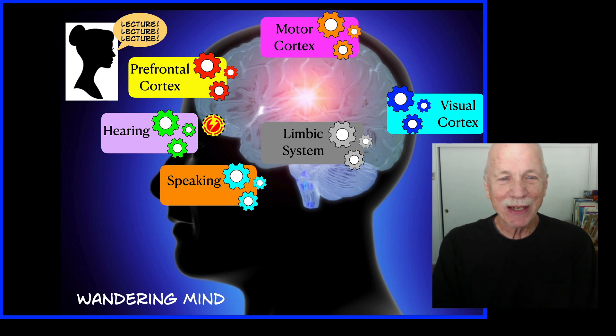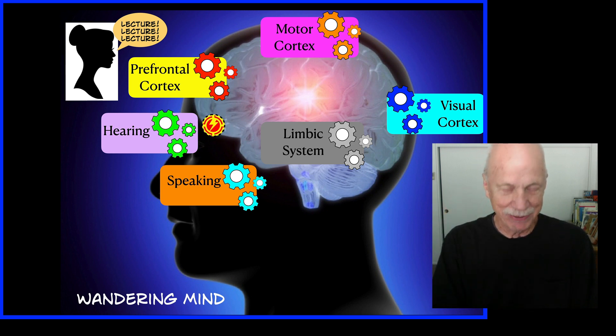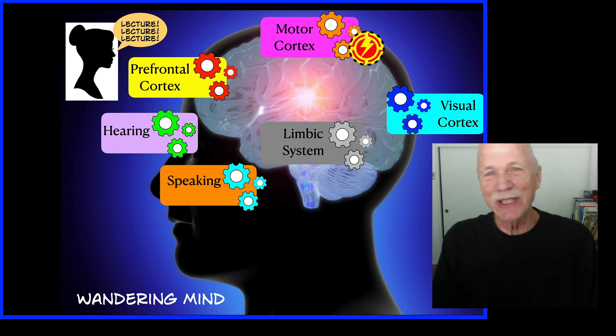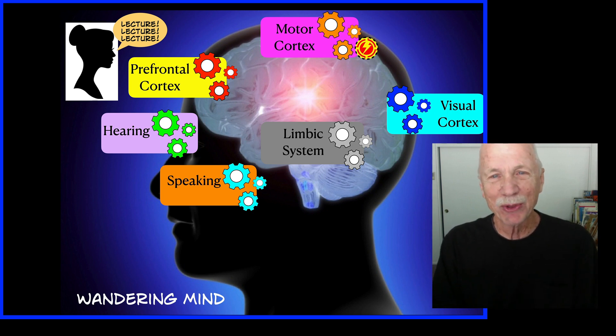So she's talking and the child hears. And the hearing center of the brain is active. But then the kid gets a little fidgety in the motor cortex, the part of the brain that controls physical movement pops on.